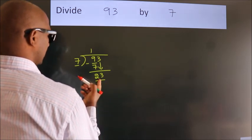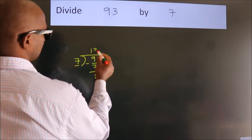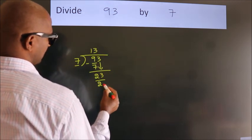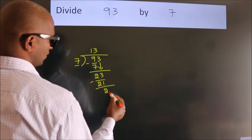A number close to 23 in 7 table is 7 3s 21. Now, we subtract. We get 2.